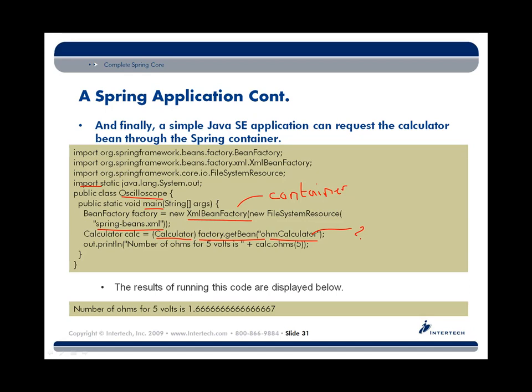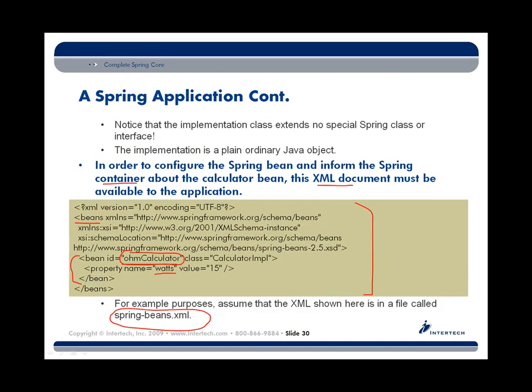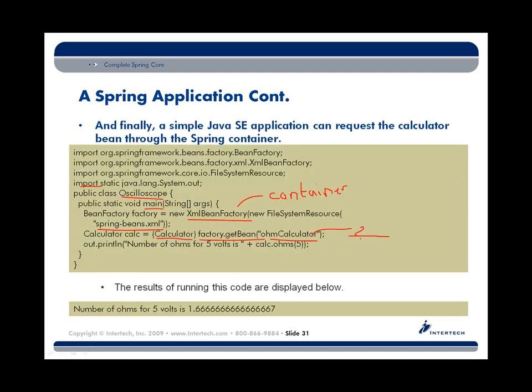At that very instance, the Spring bean container reads our configuration and determines that the property watts should be set to a value of 15. That's dependency injection at work — that's the IoC we talked about — giving or providing data and other objects to our Spring beans. In this case, a simple integer value to the watts property. That all happens courtesy of this one line of code.